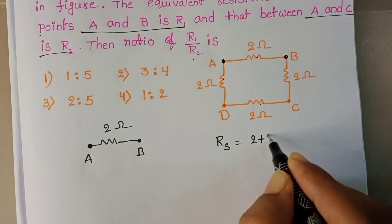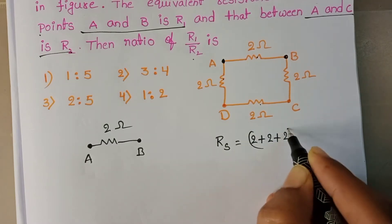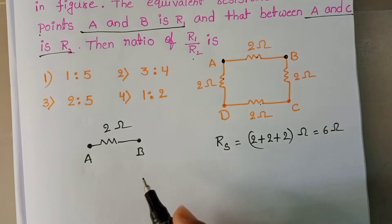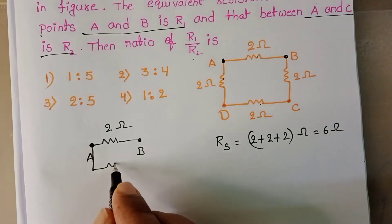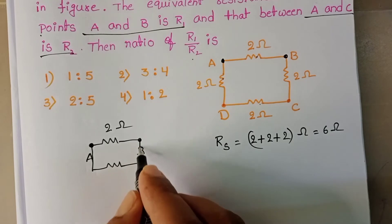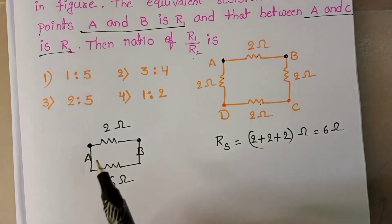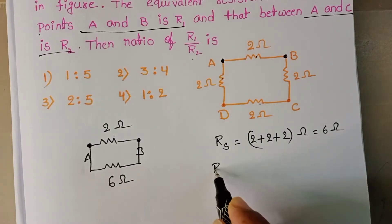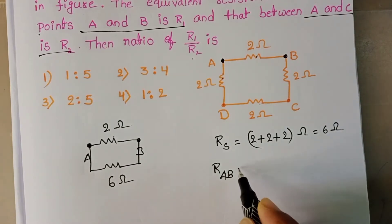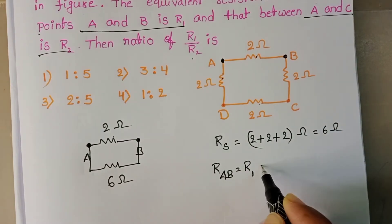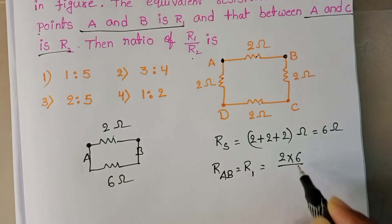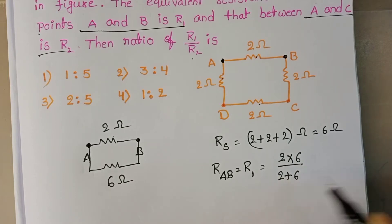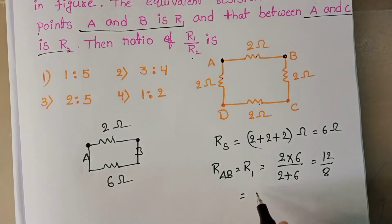The series resistance is 2 plus 2 plus 2, which equals 6 ohm. So we have a 2 ohm and a 6 ohm resistor connected in parallel between A and B. R1 equals 2 into 6 by 2 plus 6, which is 12 by 8, equals 3 by 2 ohm.